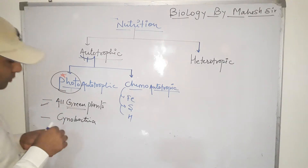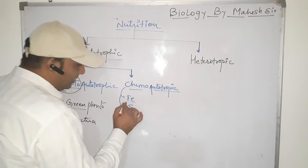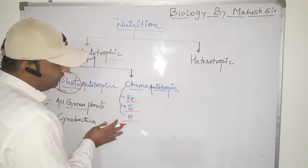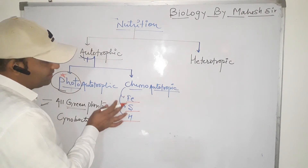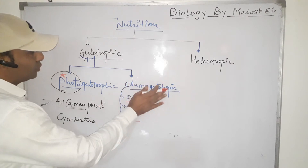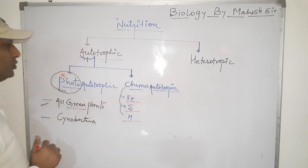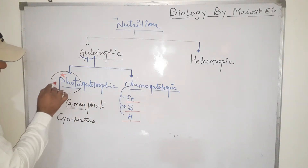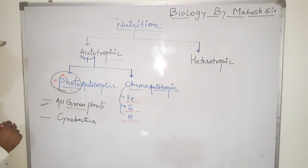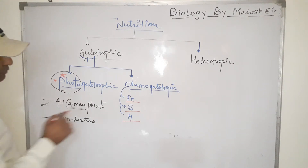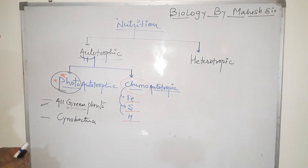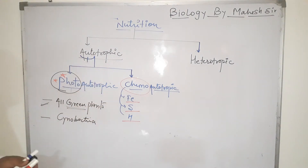Chemo-autotrophs include iron bacteria, sulfur bacteria, and hydrogen bacteria, which prepare food with the help of iron, sulfur, and hydrogen respectively. So they follow chemo-autotrophic nutrition. In the first case, light is the main source for food preparation, and in the second case, chemicals are the main source. Both are types of autotrophic nutrition.